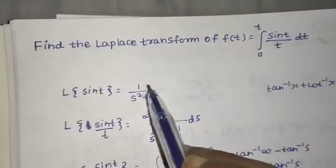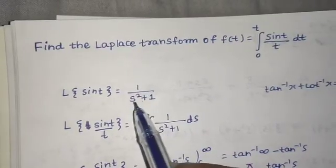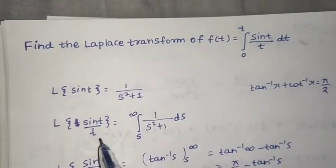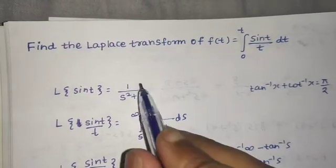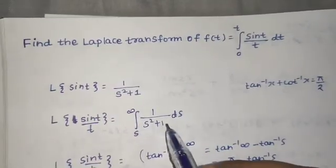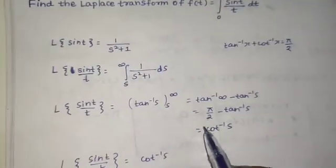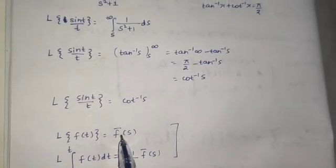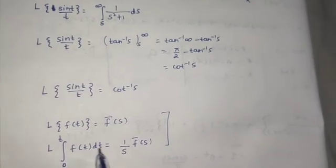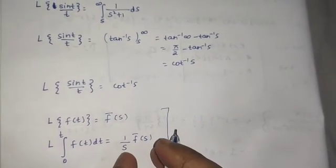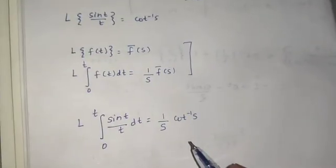To recap: we know the Laplace of sin(at) is a/(s² + a²). Then we used the division by t property — integrate from s to infinity of the Laplace of sin(t) — and got cot⁻¹(s). Then we used the rule that the Laplace of the integral from 0 to t of f(t) dt equals F(s)/s, giving the final answer of (1/s) cot⁻¹(s).